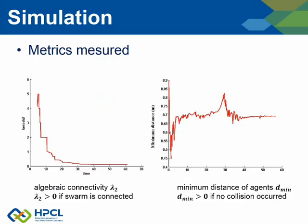Some metrics are measured. The Fiedler eigenvalue of the overall network is displayed, and our approach succeeds in maintaining a connected network and coordinated path following as lambda 2 is larger than 0 for all time. The minimum distance shows that our technique is also valid in avoiding collisions.